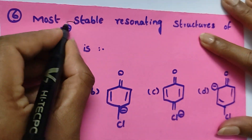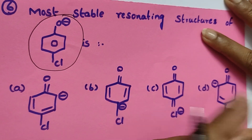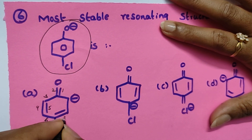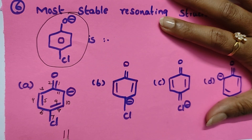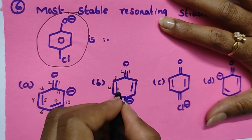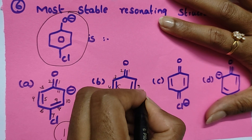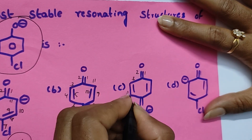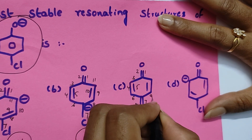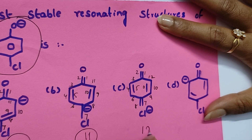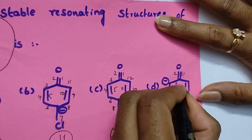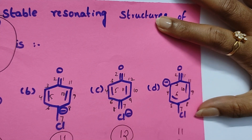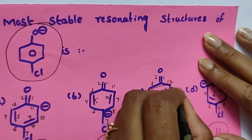Question number six: most stable resonating structure. Count the bonds — structure A has eleven covalent bonds. Structure C: one, two, three, four, five, six, seven, eight, nine, ten, eleven, twelve — twelve covalent bonds. The other structures have eleven. Option C has the most covalent bonds, so option C is the correct answer.